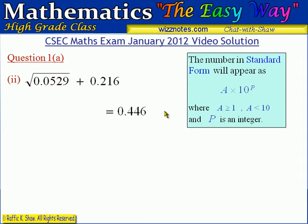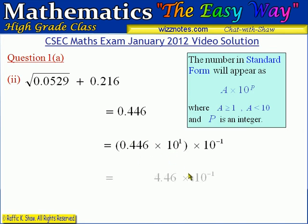To get the decimal point in the correct position, we need to multiply by 10 to the 1, moving the decimal one place to the right. To correct that multiplication, we also multiply by 10 to the negative 1. When we execute this, 0.446 becomes 4.46 times 10 to the minus 1. That's the answer for part 2 of question 1A.